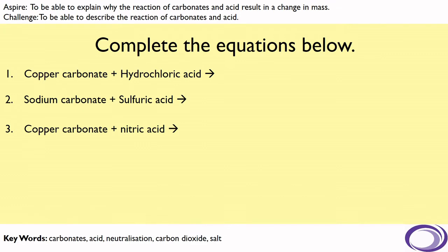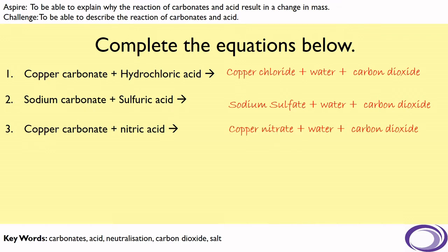So you should have that copper carbonate plus hydrochloric acid would form copper chloride and water and carbon dioxide. Sodium carbonate and sulfuric acid would form sodium sulfate and water and carbon dioxide. And copper carbonate with nitric acid would form copper nitrate and water and carbon dioxide.